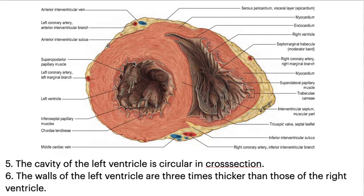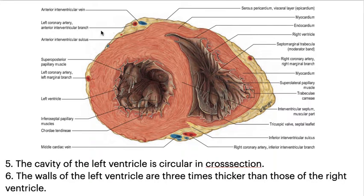The cavity of the left ventricle is circular in cross-section. The walls of the left ventricle are three times thicker than those of the right ventricle, as clearly visible in the diagram.